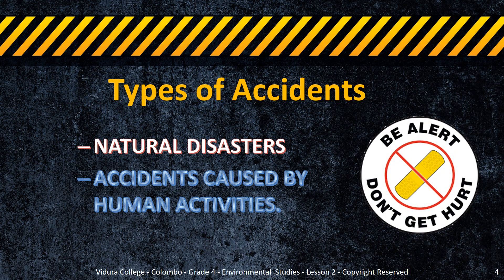Types of Accidents. There are two types of accidents according to their cause. Some accidents occur due to natural phenomena which we are unable to control — these are referred to as natural disasters. But most accidents happen due to irresponsible actions by humans, and they are called accidents caused by human activities.